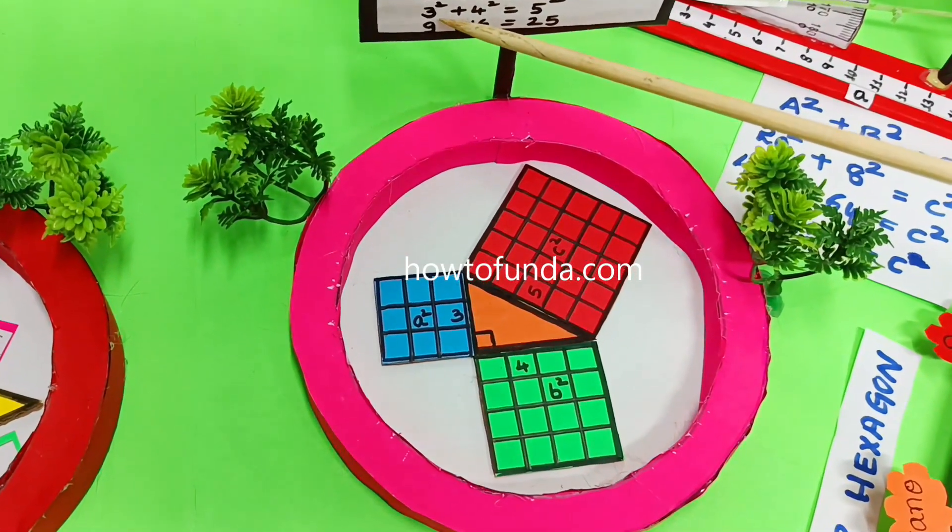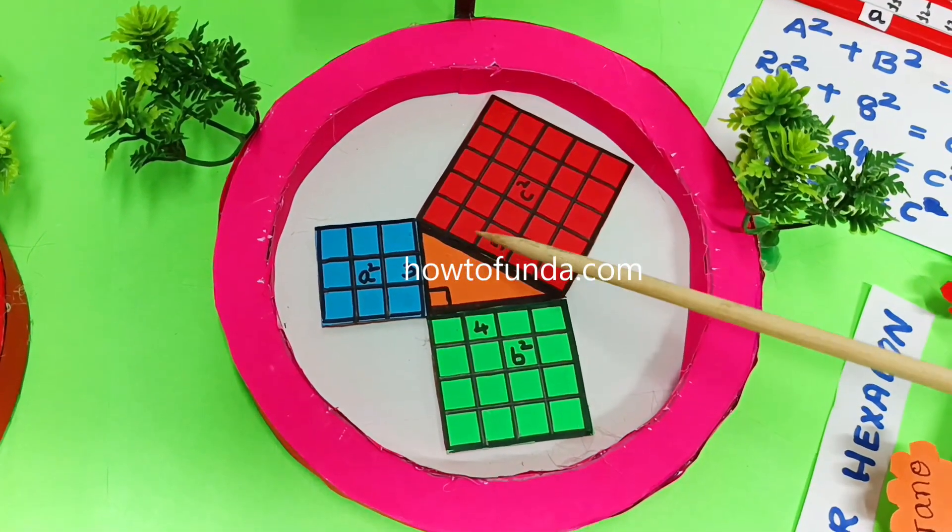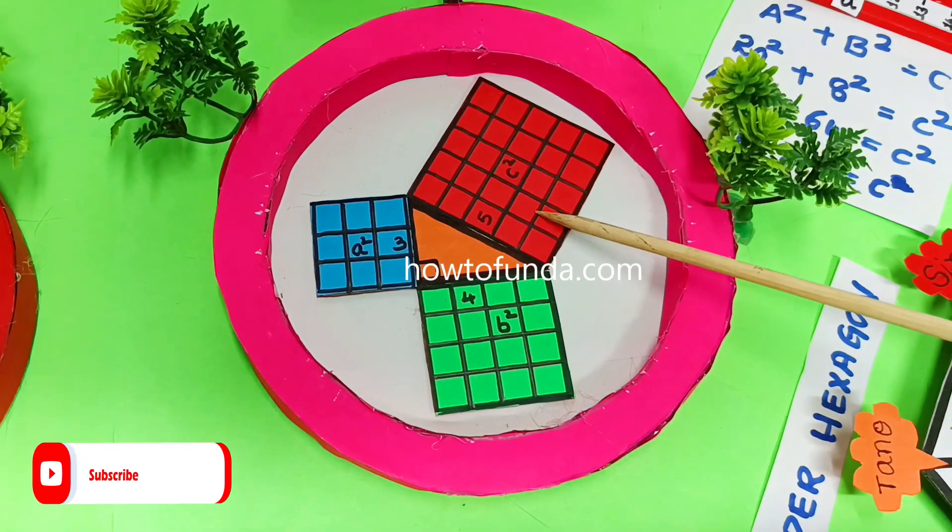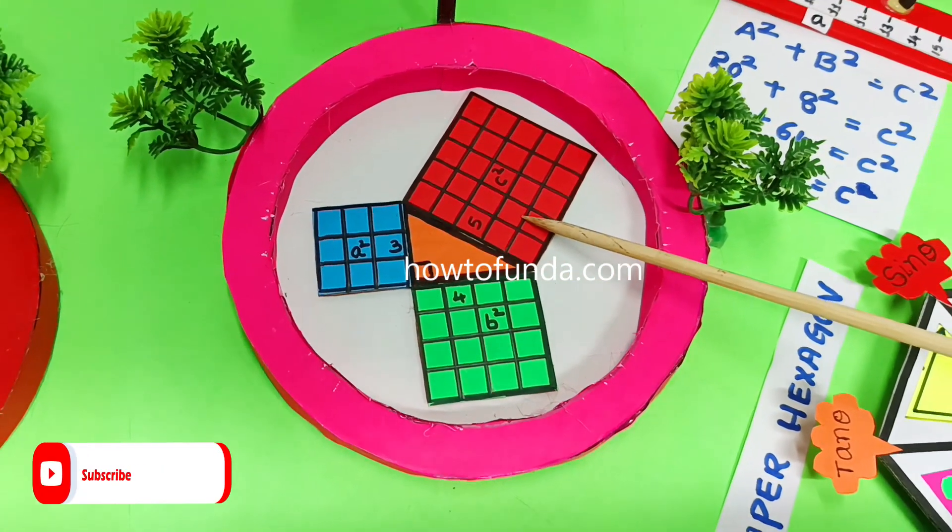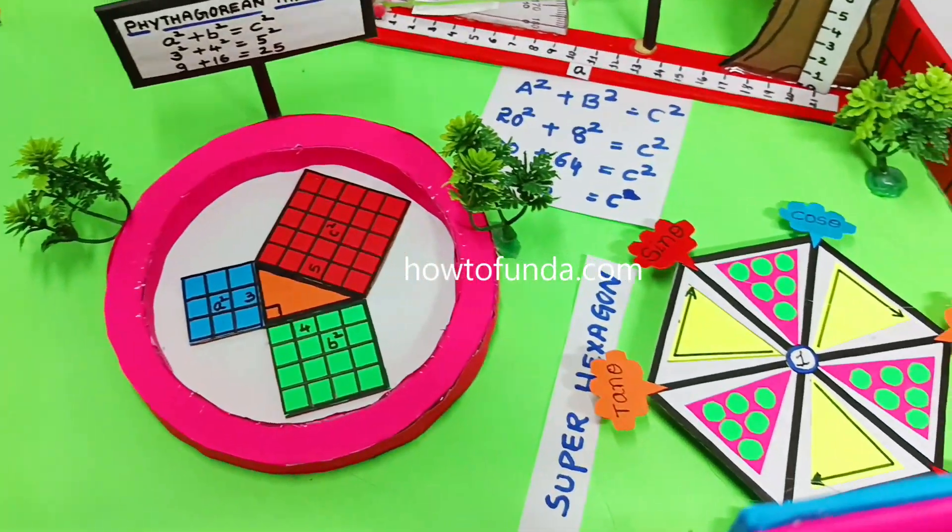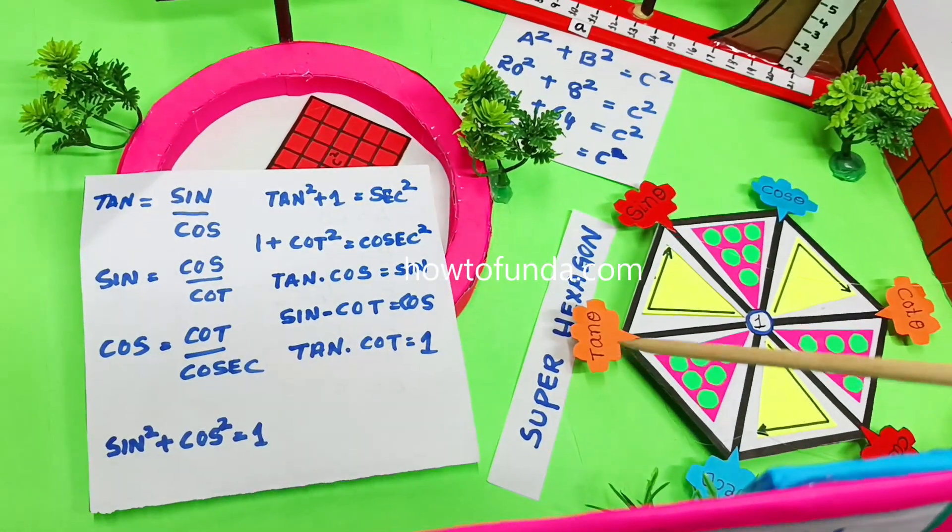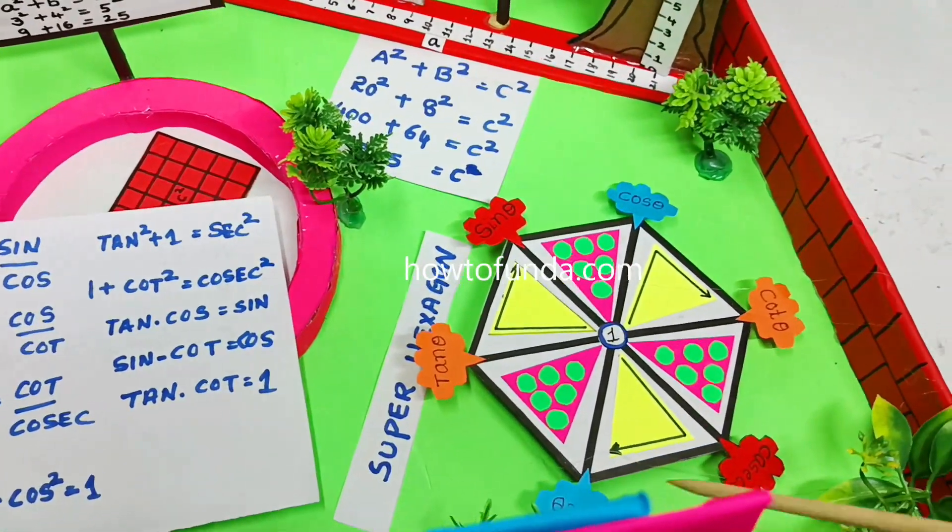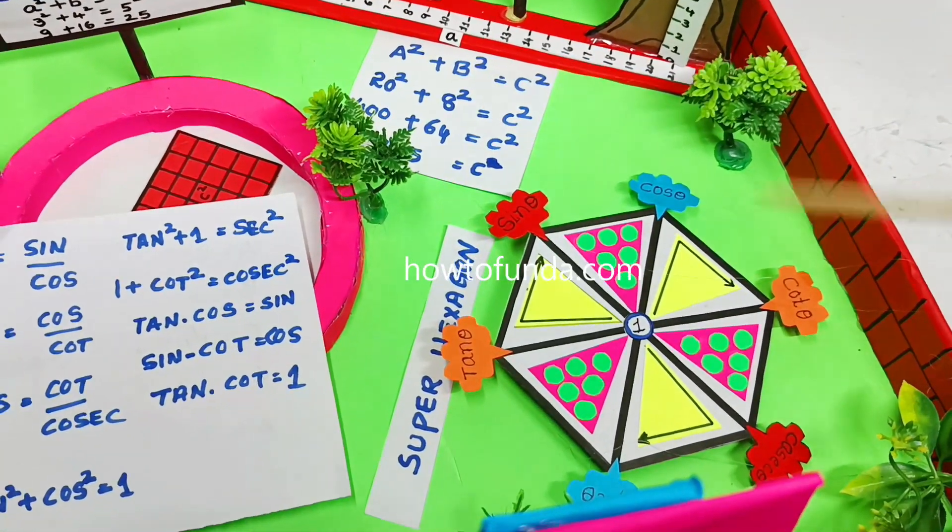In these square boxes we have a² and b² which is equivalent to hypotenuse square. That is what we wanted to depict here for this Pythagorean theorem. And also we have represented the super hexagon here, all these are represented by making use of this super hexagon.